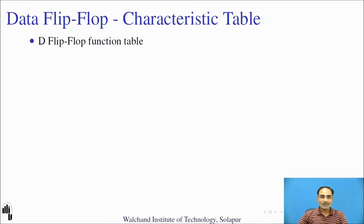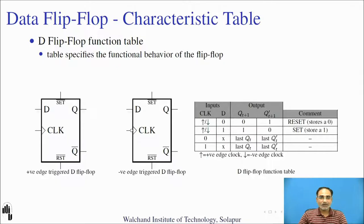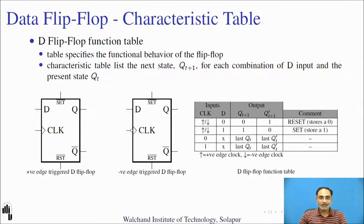Let us first revisit the function table of the D flip-flop. This table specifies the functional behavior of the flip-flop in tabular form. The characteristics table lists the next state Q(T+1) for each combination of the D input and the present state. The D flip-flop has two states: a reset state and a set state. On the slide you will see two symbols shown for D flip-flops — the positive edge-triggered D flip-flop and the negative edge-triggered D flip-flop.